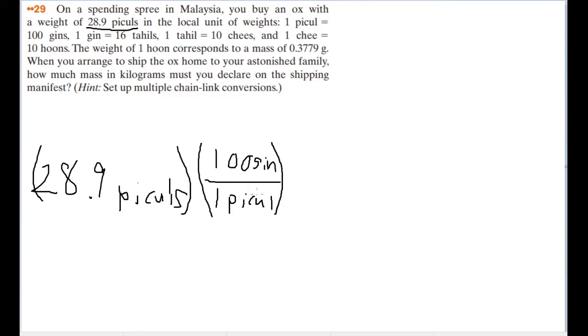Continuing on down this line in the same vein, we'll take into account the fact that there are 16 tails in one jin, and 10 shi's in one tail.